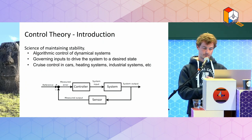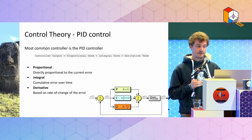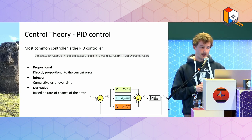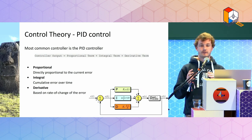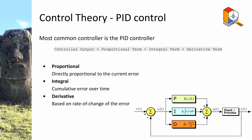PID stands for Proportional-Integral-Derivative and consists of three terms. The proportional term is simply proportional to the error — the difference between our target state and the current state, multiplied by a constant. The integral term is the cumulative error over time.